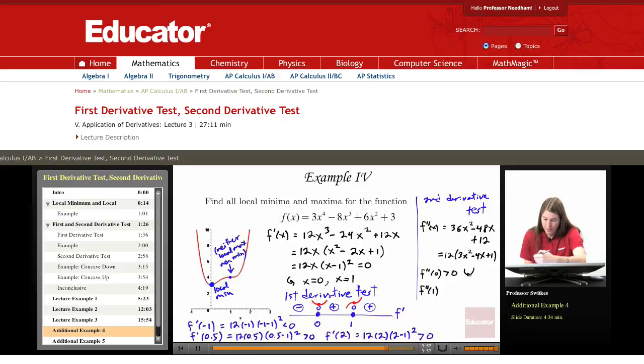Now, notice that f double prime of 1 is 0, and so the second derivative test is inconclusive regarding what happens at x equals 1. However, the first derivative test did the job for us. So again, the second derivative test is usually faster and easier to apply, but if it's inconclusive, then you can go back to the first derivative test.